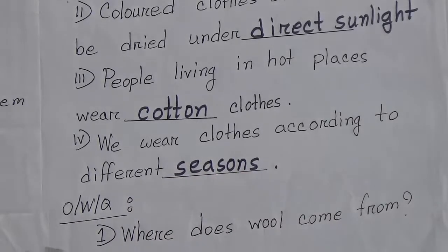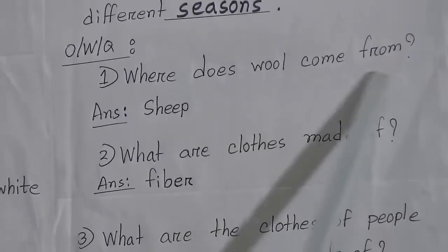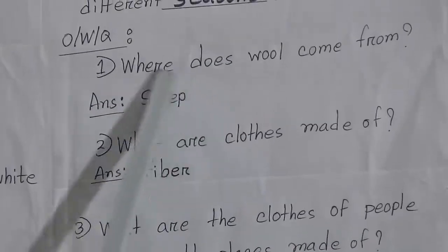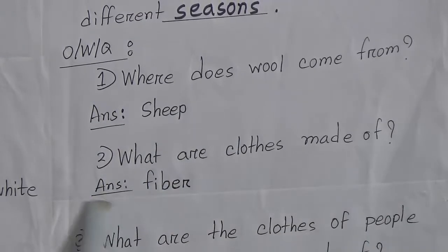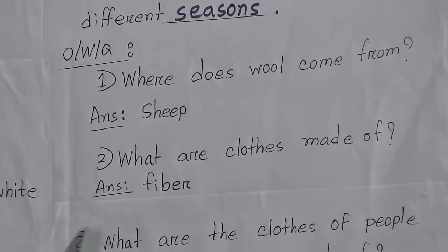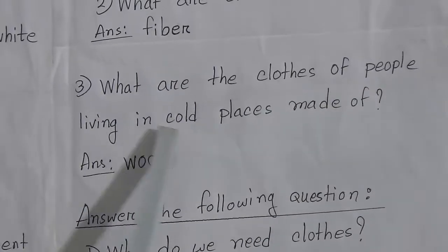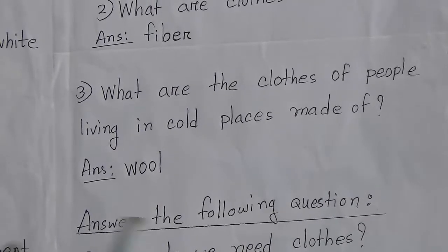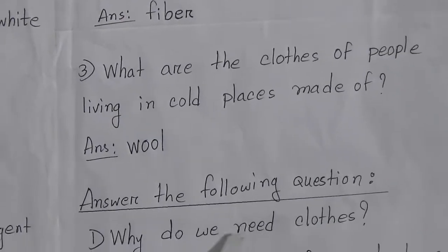Next is one word questions. Number one: Where does wool come from? The answer is sheep. Number two: What are clothes made of? The one word answer is fiber. Number three: What are the clothes of people living in cold places made of? The answer is wool.